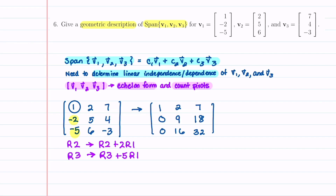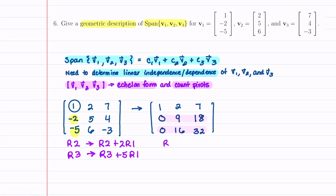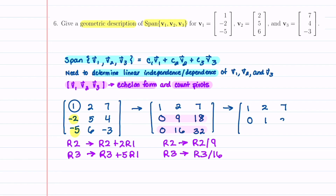Now look at rows 2 and 3 — the numbers in those rows are multiples of each other. I call this housekeeping: we're going to take row 2 and replace it with row 2 divided by 9, and take row 3 and replace it with row 3 divided by 16. That's called scaling, and it makes our matrix a little easier to work with. So we have 1, 2, 7, then 0, 1, 2, and then 0, 1, 2.